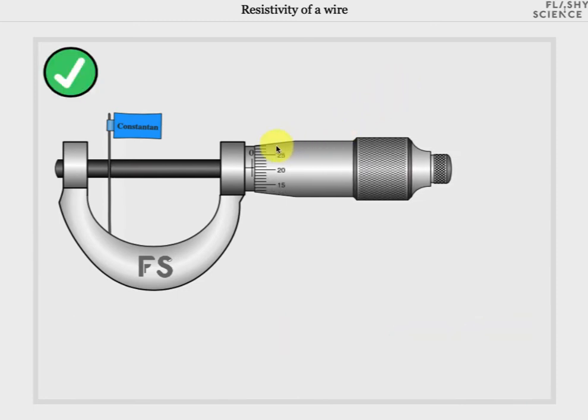You can now use the micrometer scale to measure the wire width. If you're not sure how to do this, see our instructions online or try our micrometer experiment.